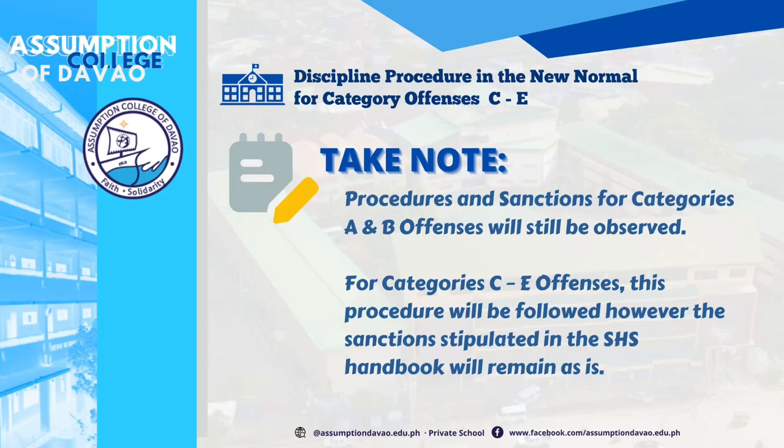Take note: Procedures and sanctions for Category A and B offenses will still be observed. For Category C to E offenses, this procedure will be followed. However, the sanctions stipulated in the senior high school handbook will remain as is.